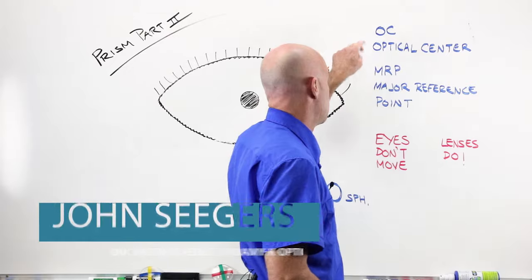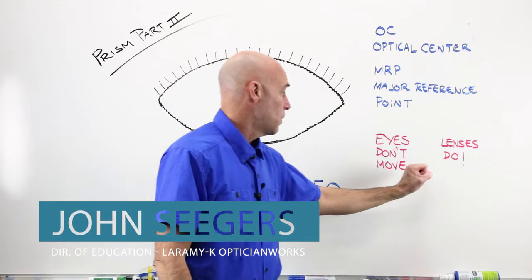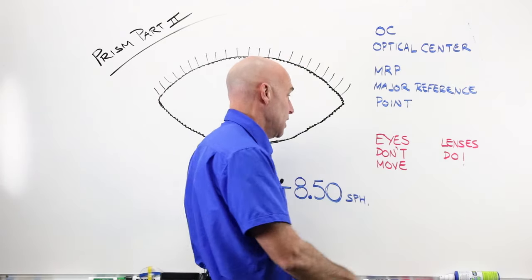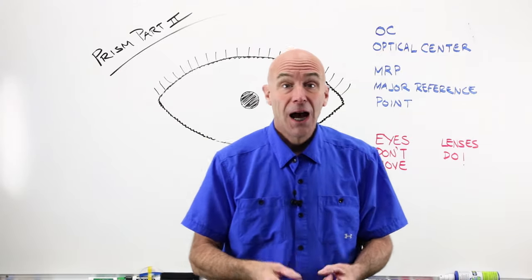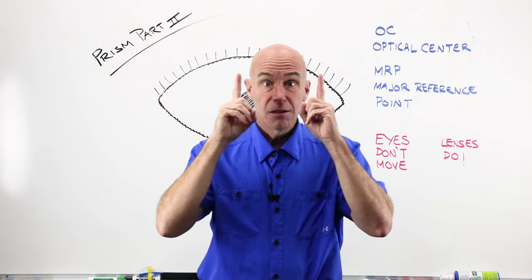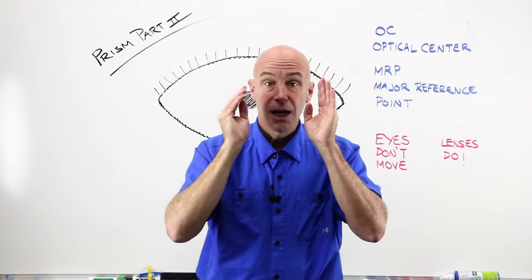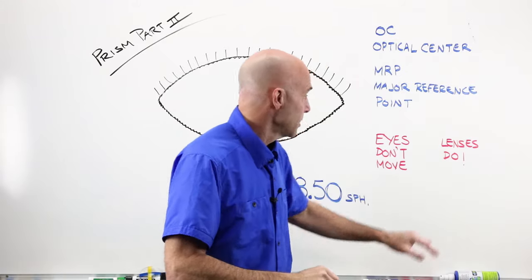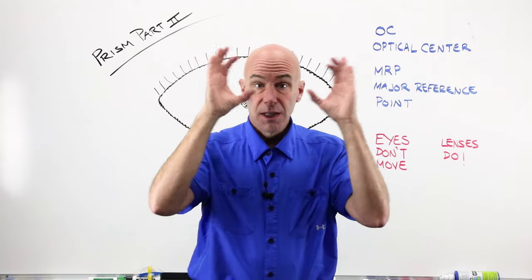The first installment of this piece is gonna be talking about the OC versus the MRP, but what I want you to take away most from the next couple of minutes is to always remember that eyes don't move. I cannot take my little narrow BD 58 PD and make it a 64. I can't move one eye up here and one eye down here. My eyes, your eyes, your customer's eyes are fixed.